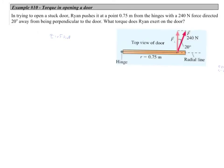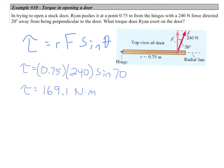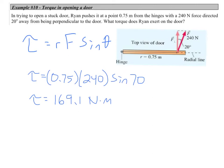Here's an example: in trying to open a stuck door, Ryan pushes on it at 0.75 meters from the hinges with a 240 newton force directed at 20 degrees away from being perpendicular to the door. We want the torque Ryan exerts. Applying our equation — R times F times sine theta — we recognize that the angle in our torque equation is between the applied force and the radial line. So we use a 70 degree angle, and we end up with a torque of 169.1 newton meters. The units of torque are newton meters.